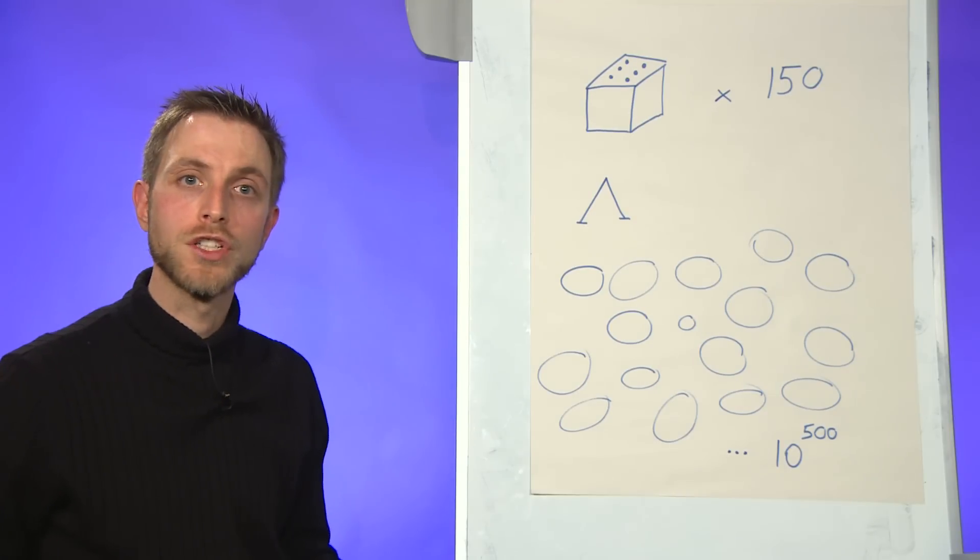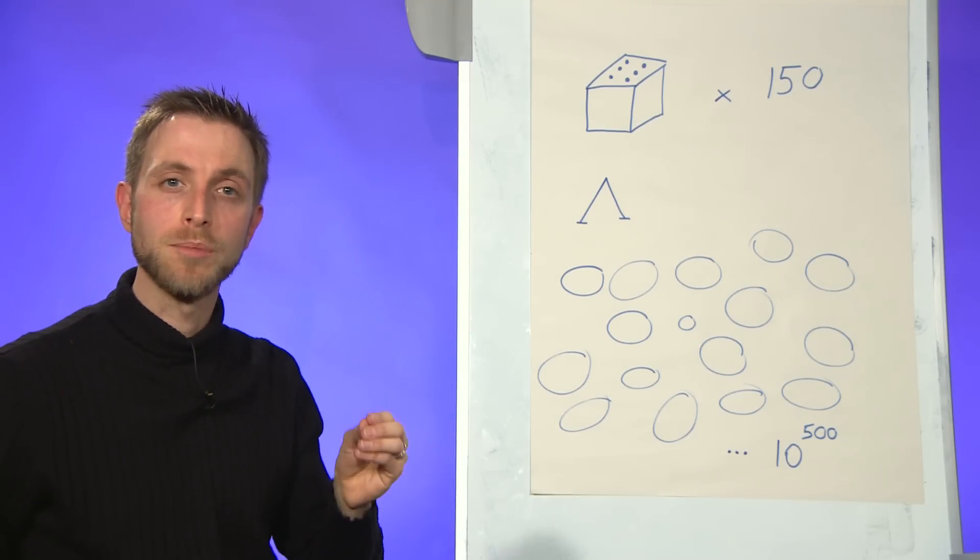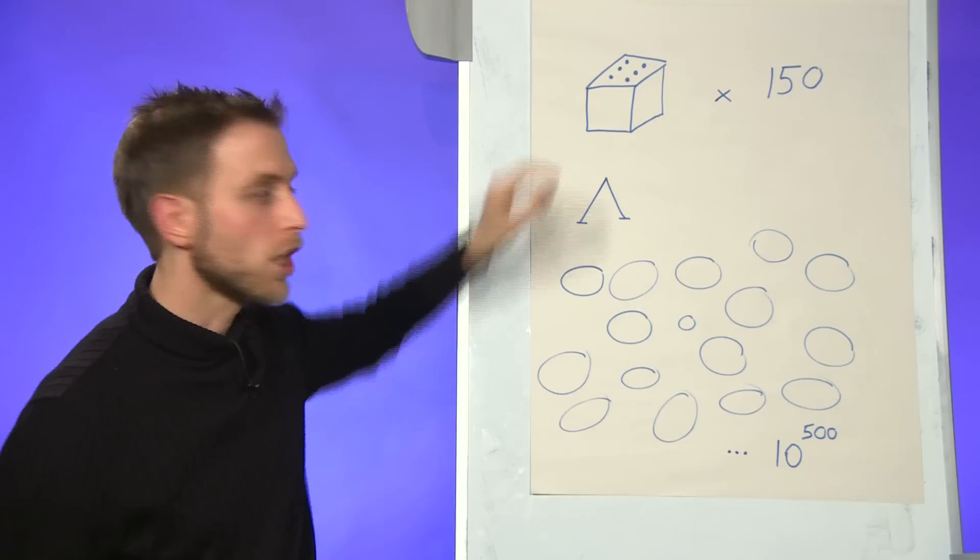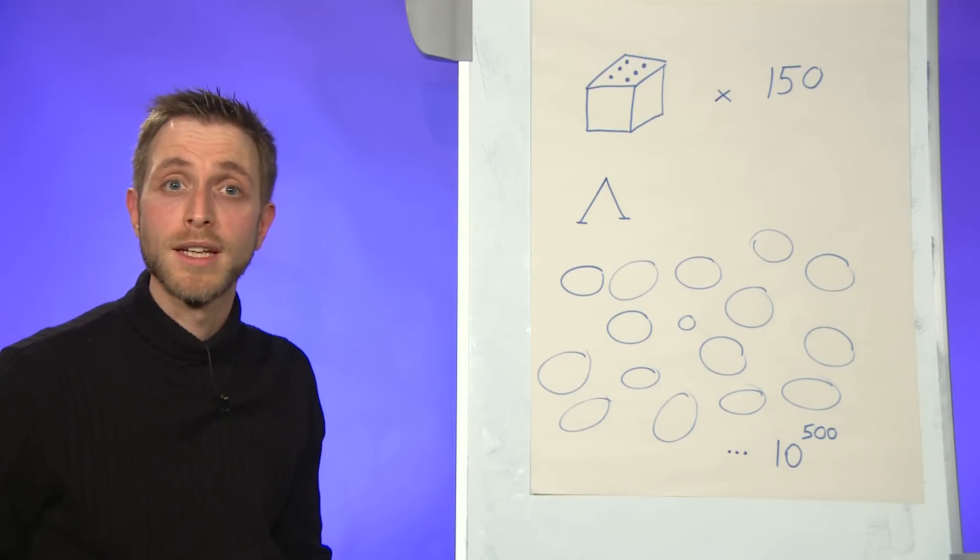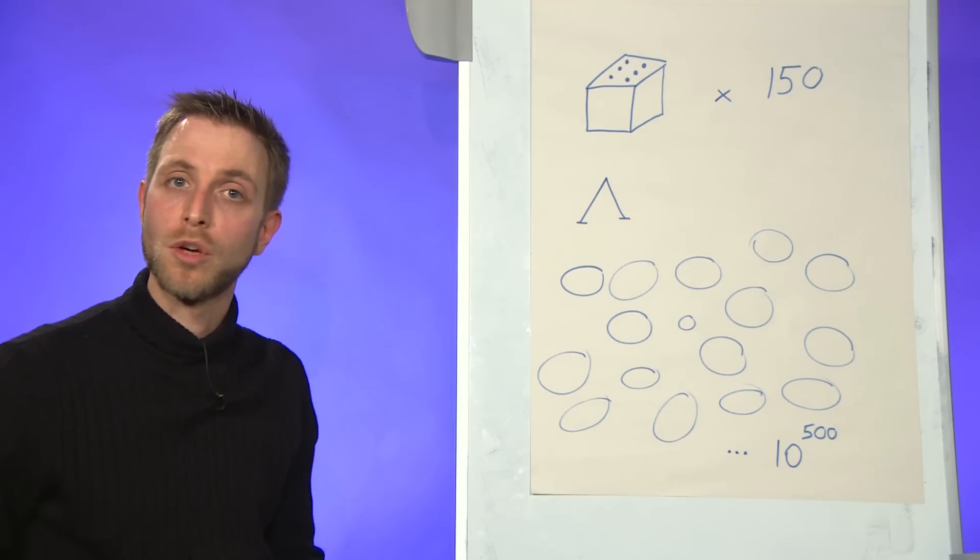There is more. If we change the small value of lambda by just a little bit, in other words, if we change the outcome of one of the dice by just a little bit, the universe as we know it would not exist.